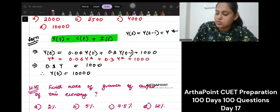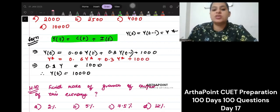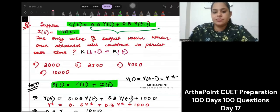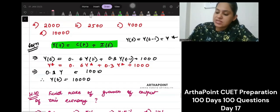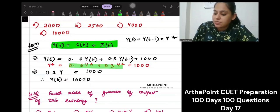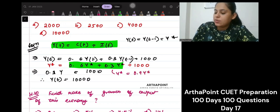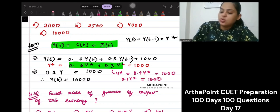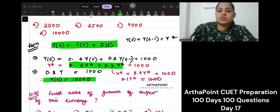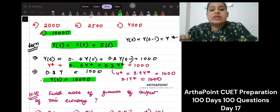This is not 0.06. This is 0.6. Okay. So this will be 0.9Y star. So you will get Y star as 0.9Y star plus 1000. So 0.1Y star will be 1000. So Y star would be 10,000. So the answer to this question is 10,000.